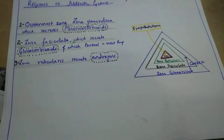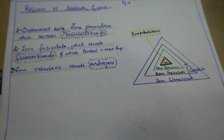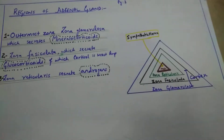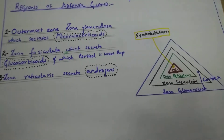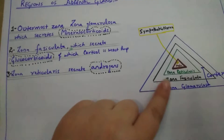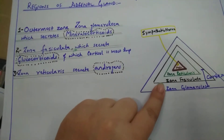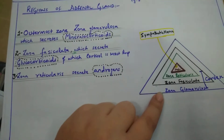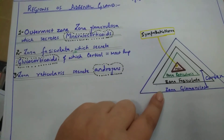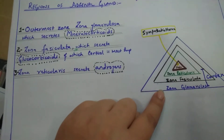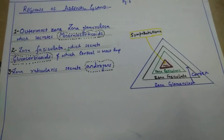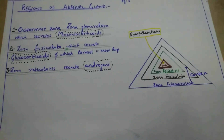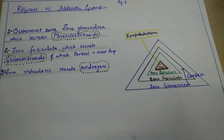There are three regions in the cortical part of the adrenal gland. The medulla has only one part, but the cortex has three parts: zona reticularis, zona fasciculata, and zona glomerulosa. These are the three regions of the adrenal gland placed on top of the kidney.